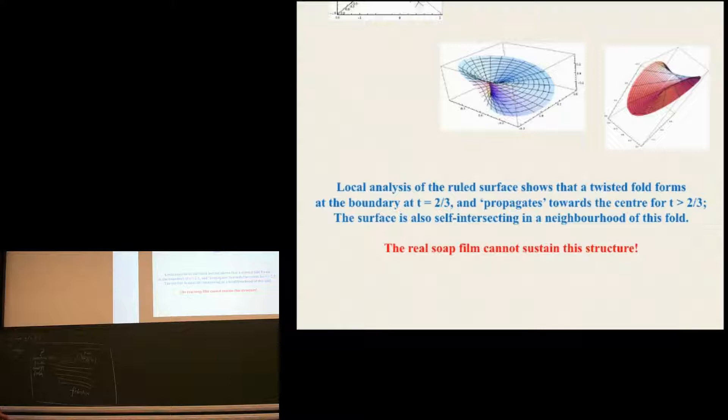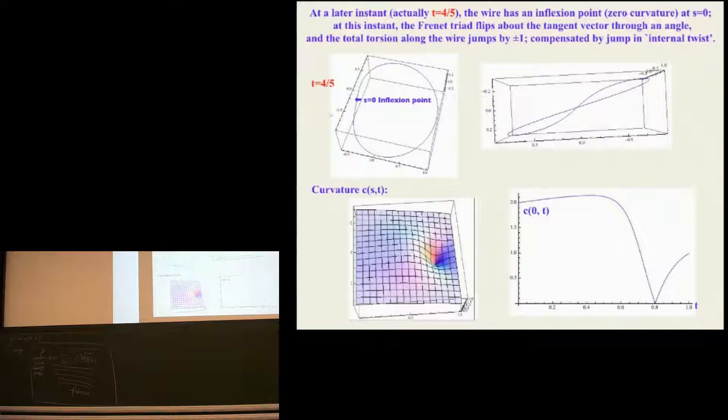Local analysis of the ruled surface shows that a twisted fold forms at the boundary at this time T equals two-thirds and propagates towards the center for T greater than two-thirds. And the surface is self-intersecting in a neighborhood of this fold. Obviously, a real soap film can't sustain a structure of this kind. At a later instant, at time T equals four-fifths, the wire has an inflection point, a point of zero curvature, at S equals zero at a particular point. Here is the shape of the wire at that instant T equals four-fifths. It's still twisted out of the plane and it has torsion, but it has an inflection point here, point of zero curvature.